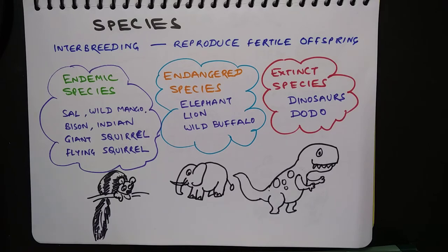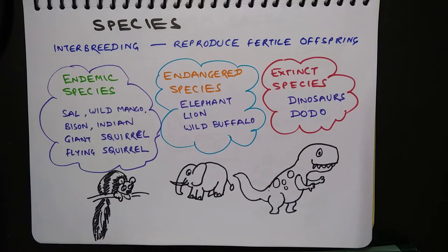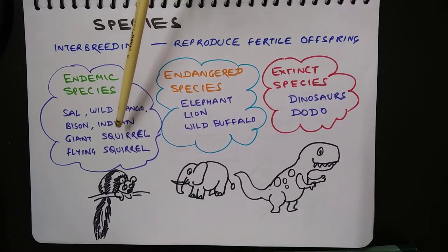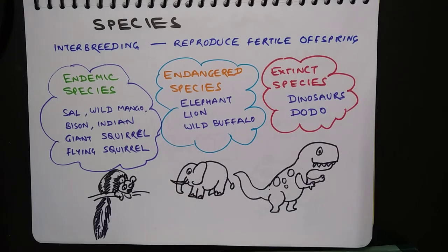From the perspective of conservation, species can be of various types. Endemic species is a species found only in a selected geographic area — for example, kangaroos are endemic to Australia. In the case of Pachmarhi Biosphere Reserve, endemic species include sal and wild mango trees, bison, Indian giant squirrel, and flying squirrel. Endangered species are species at risk of becoming extinct because their population has fallen so low that it is very difficult to continue their existence — for example, elephant, lion, and wild buffalo.